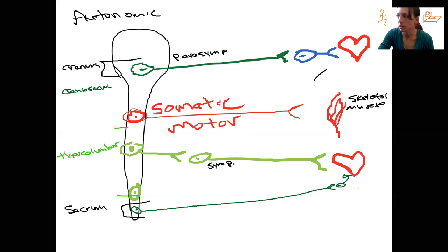What else do I want to tell you here? I want to tell you what neurotransmitters are released from these different neurons. You already know the neurotransmitter released from your somatic motor neurons - what neurotransmitter is this? Acetylcholine, yeah.